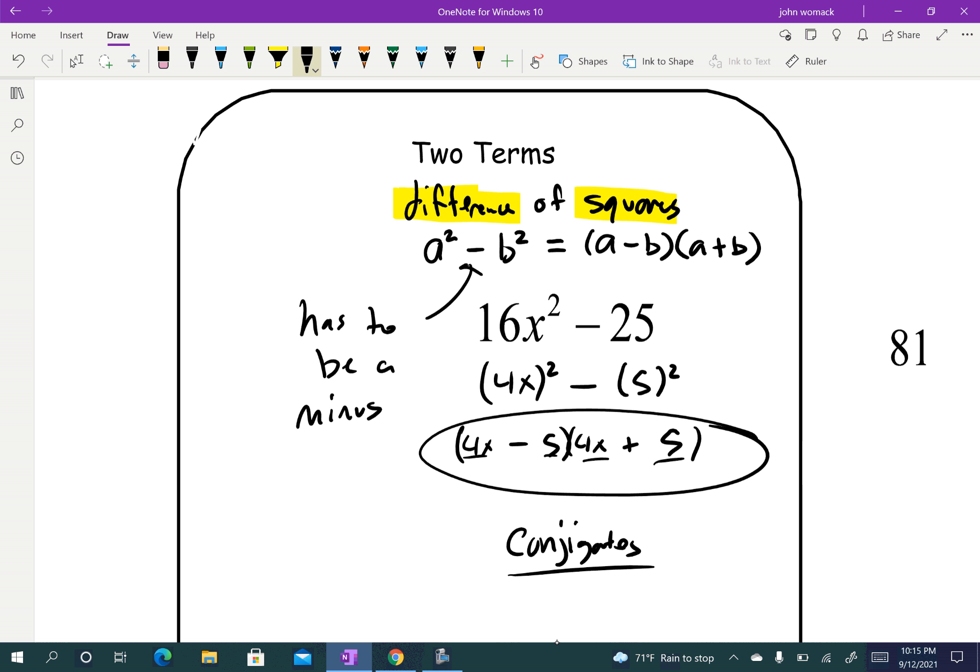So when you go to factor, first thing you always check for is, is there a common factor? And that doesn't matter how many terms there are, there could be 2, 3, 4, 100, it doesn't matter. Look for a common factor. Second thing is, how many terms does it have? Two terms we do difference of squares. Three terms we're either going to do our shortcut where I take the factors of c to add to b, or guess and check, or the perfect squares. If it's got four terms it's grouping. So if we can kind of just have that flow chart in our brain, that helps to organize our thoughts as we go through and do that.